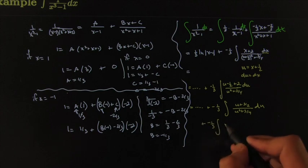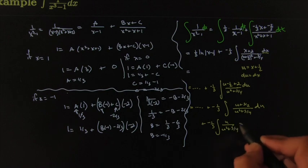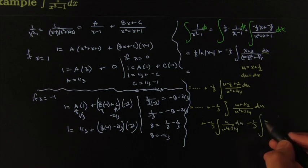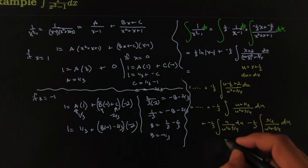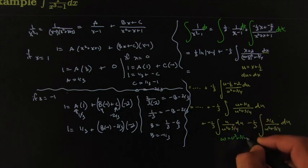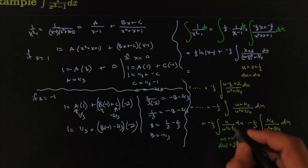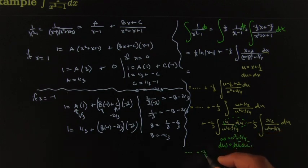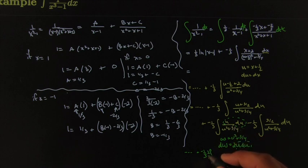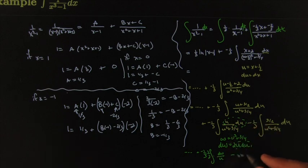Split that into two pieces: -(1/3)∫ u/(u² + 3/4) du, minus (1/3)∫ (3/2)/(u² + 3/4) du. For the first piece, let w = u² + 3/4, so dw = 2u du. That makes it easy — you just get ln|w|, i.e., ln|u² + 3/4|, times -(1/3)(1/2).